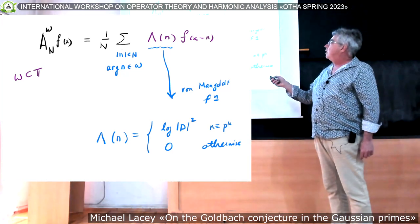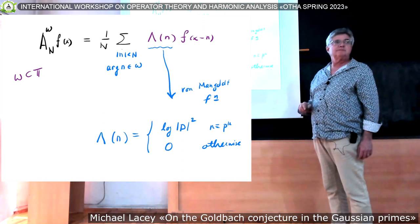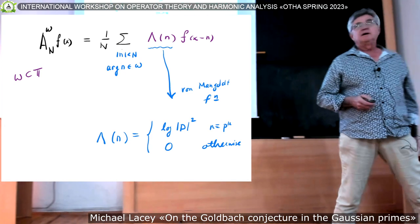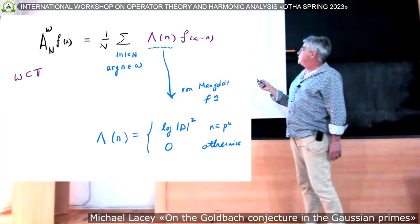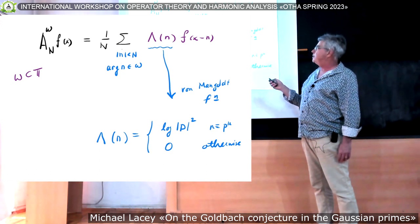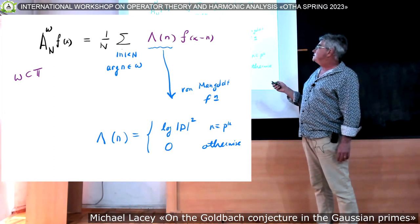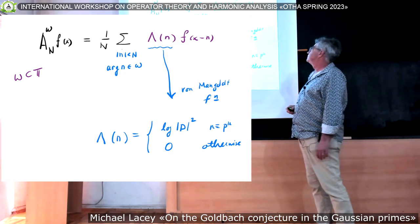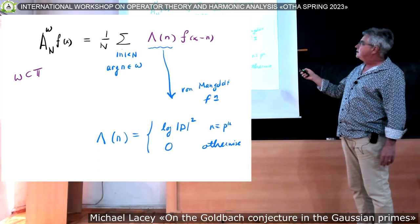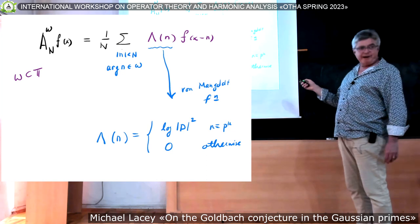We focus on averages. We fix an arc in the circle, and then we define averages relative to that arc. And we sum one to n of n less than capital N. So this is complex modulus. And we require that the argument of n be in omega. And then it looks like an average, except there is something to connect to prime numbers.